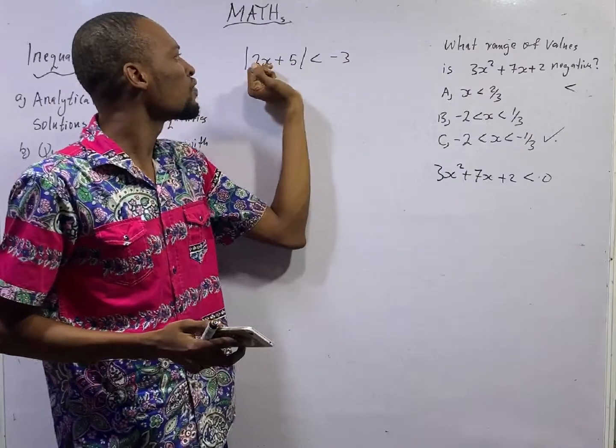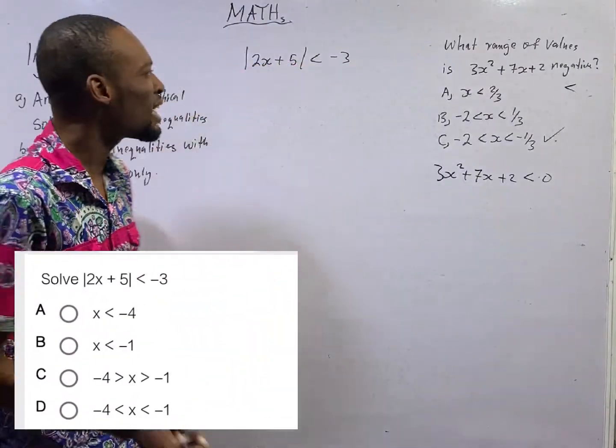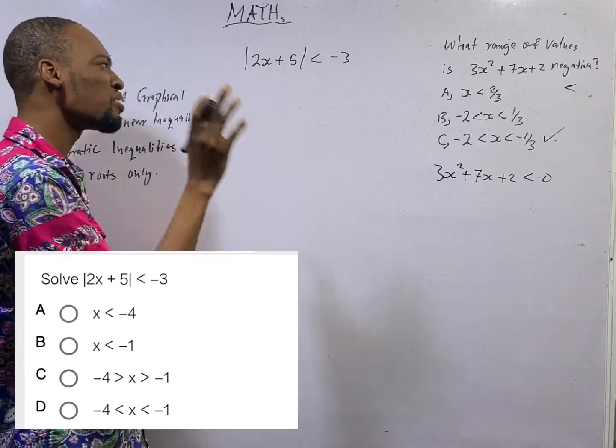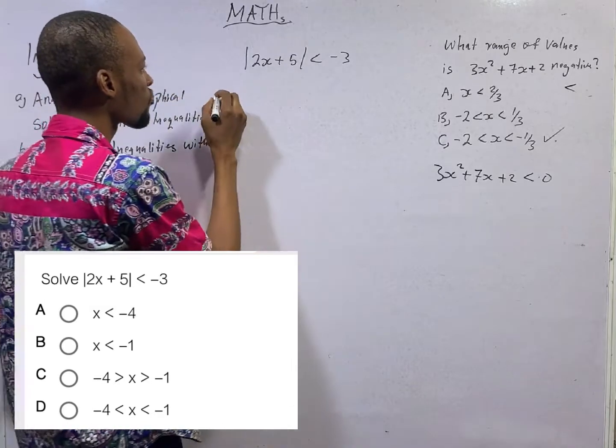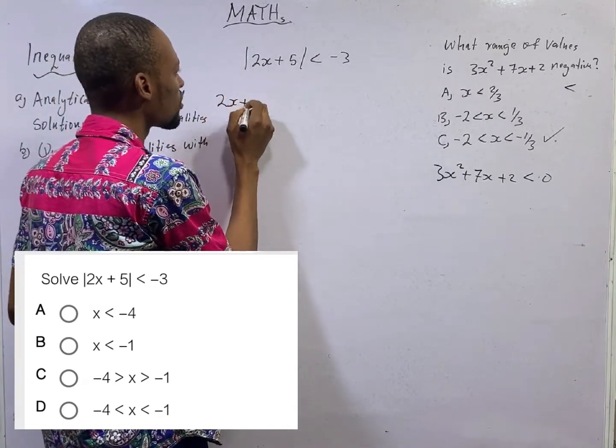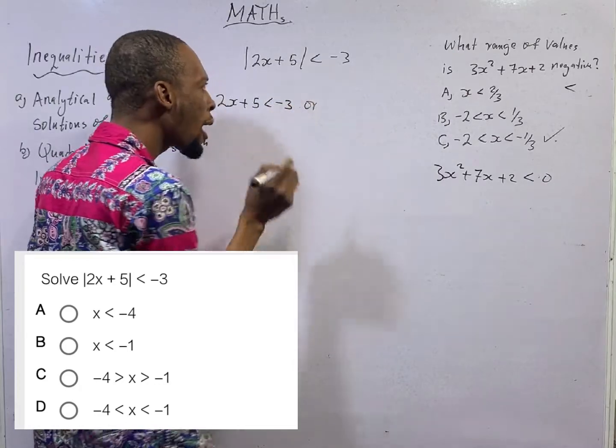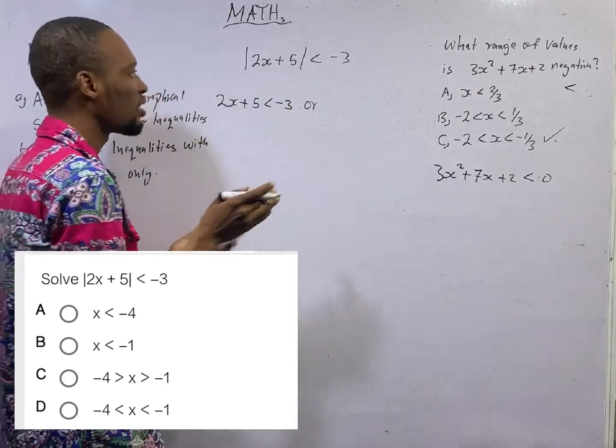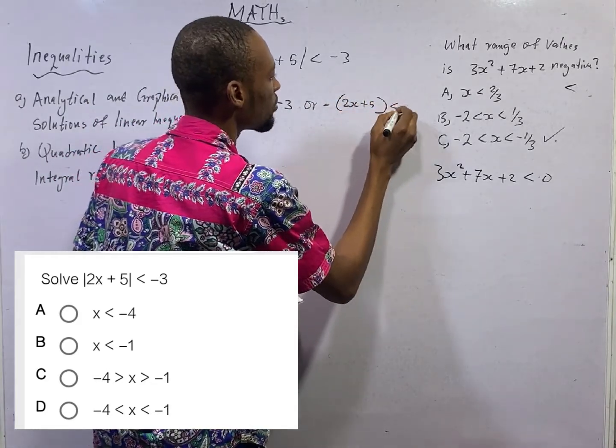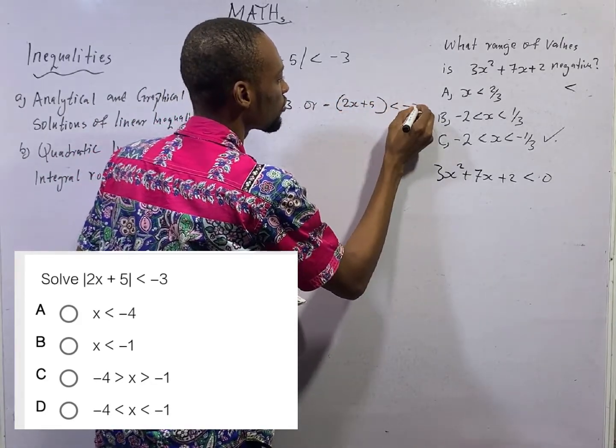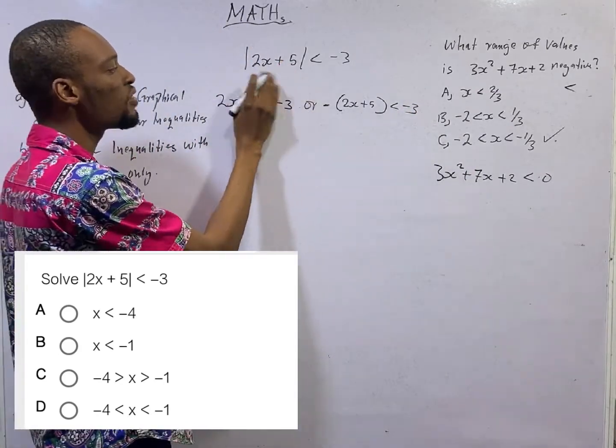The absolute value of 2s + 5 is lesser than minus 3. Anytime you are given something like this, absolute value. This is how to interpret it. It means 2s + 5 is lesser than minus 3, or minus (2s + 5) is lesser than minus 3. So you look for the positive form of this or the negative form of this.